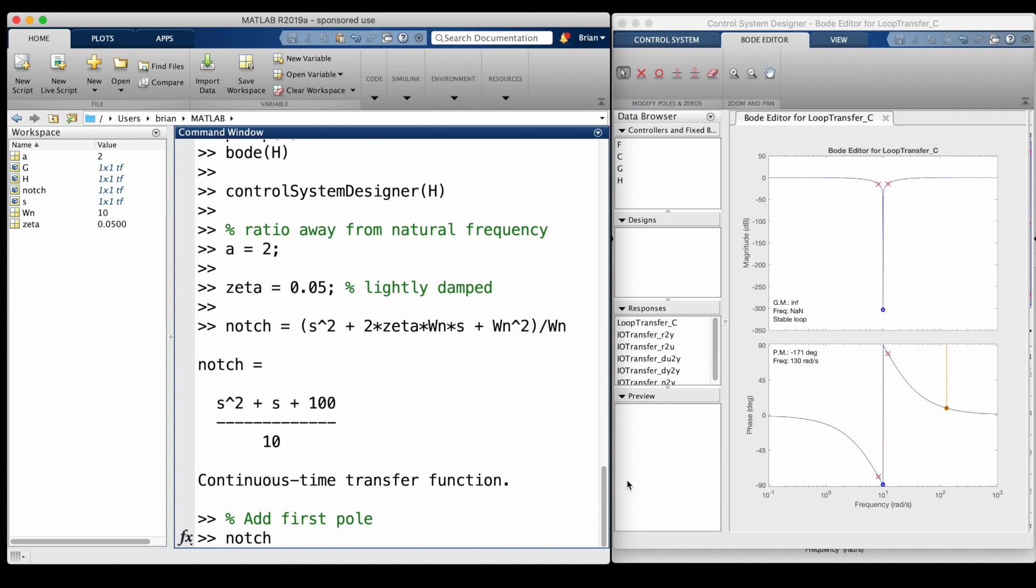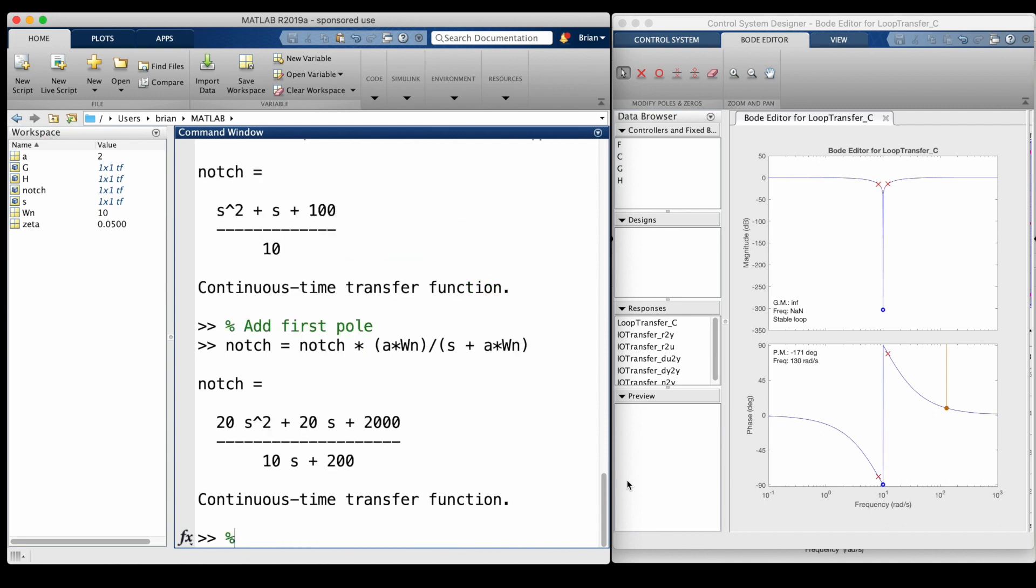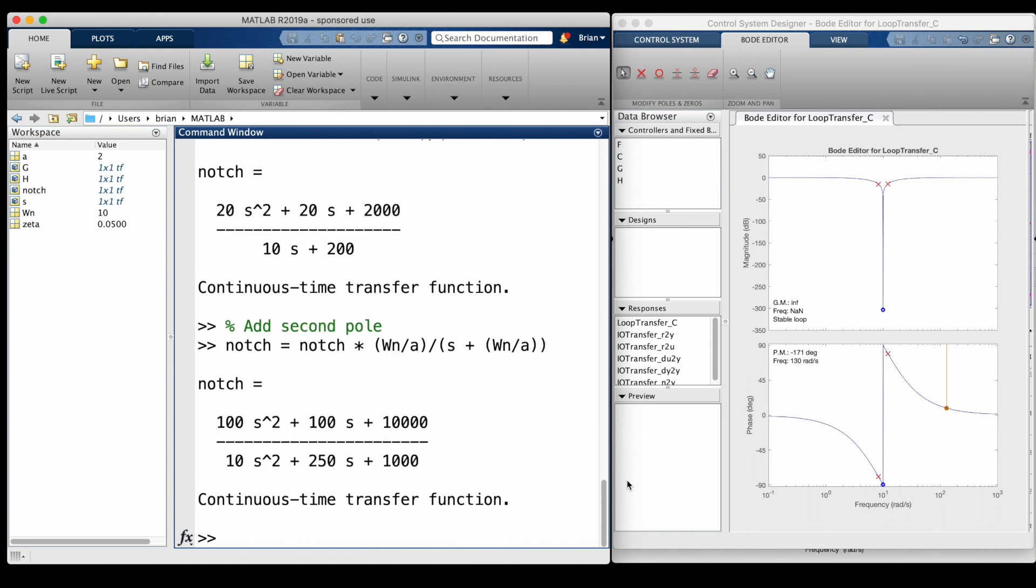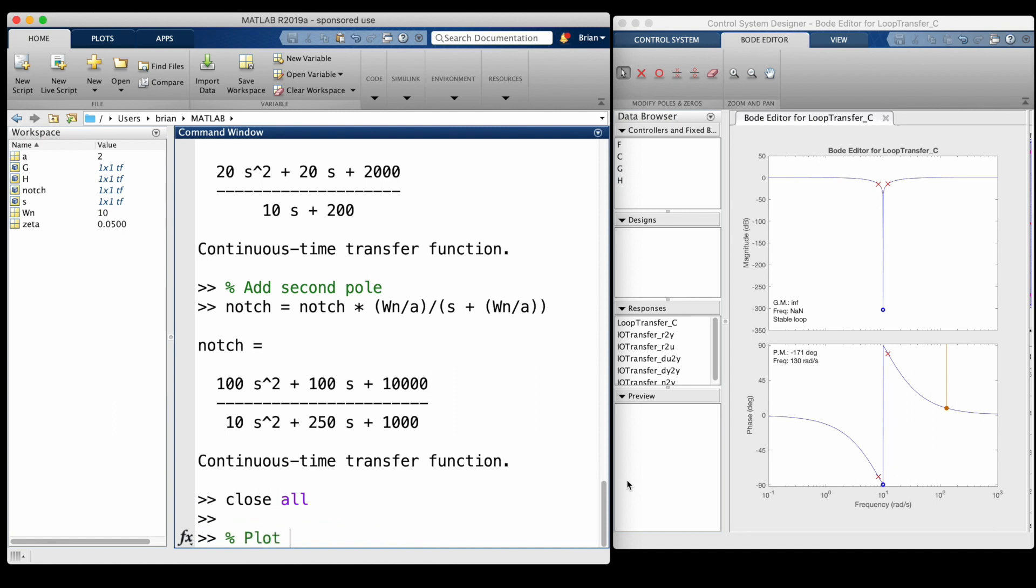Then we can add the first pole with cutoff frequency a times larger than the natural frequency, and another pole a times smaller than the natural frequency. And what we end up with is our second order bandstop filter.